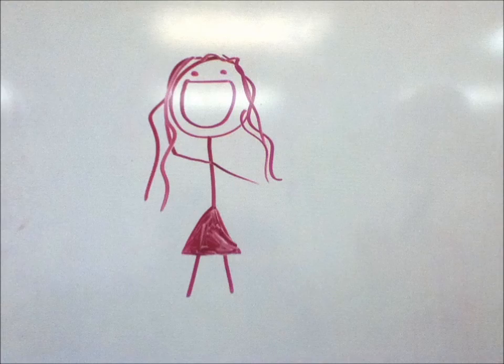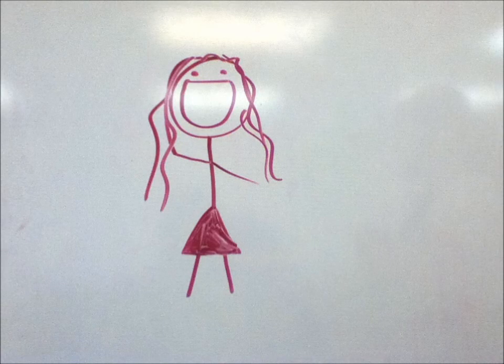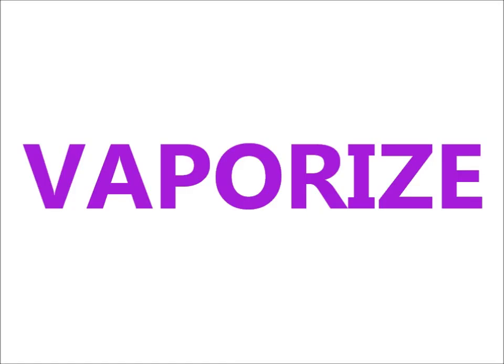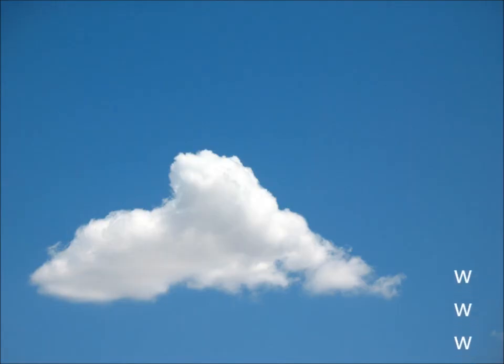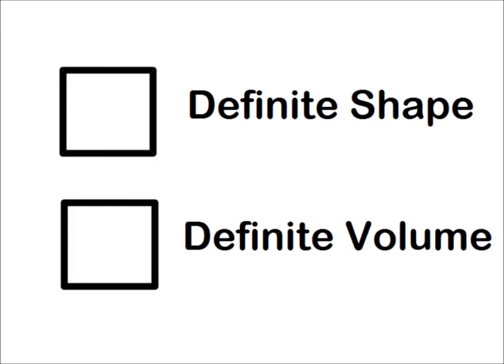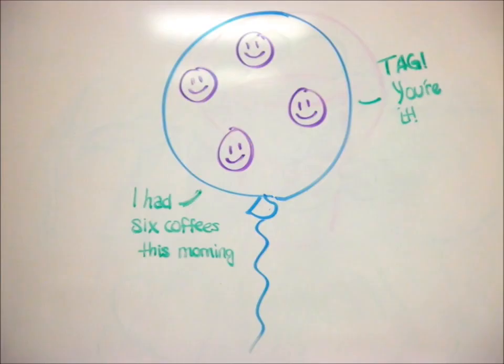Next up are gases. When more thermal energy is added, liquids transform, or vaporize, into gases through a process called vaporization. Gases have an indefinite shape and an indefinite volume, which means that atoms have lots of space. They are very active and can freely move past each other.